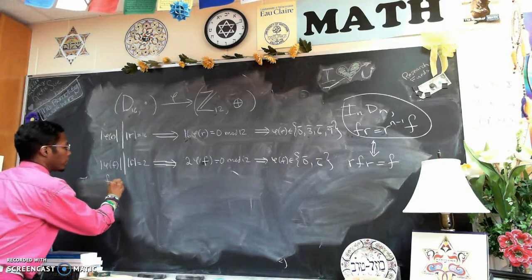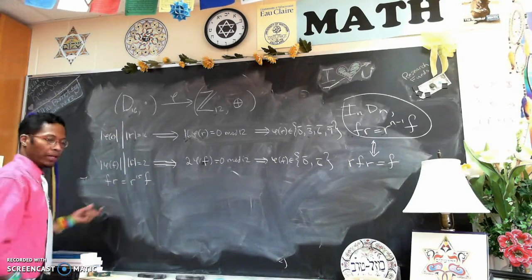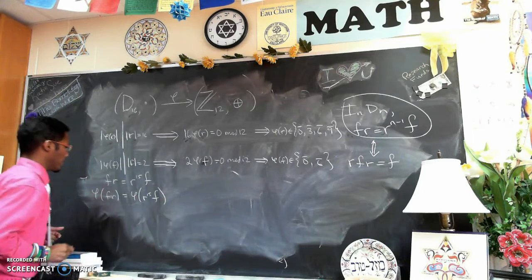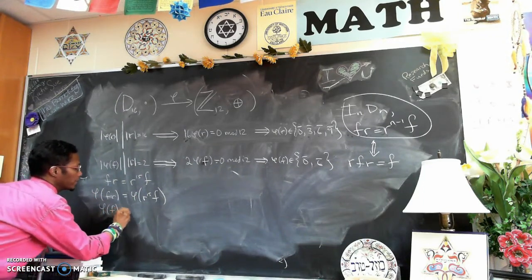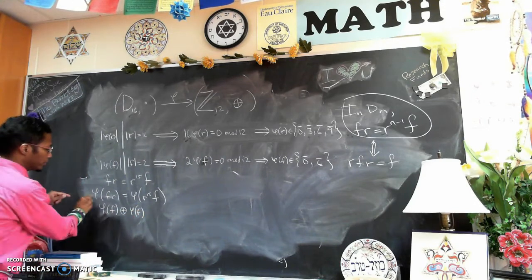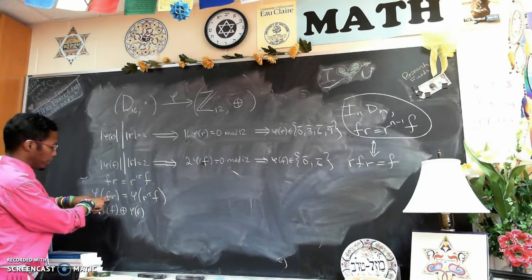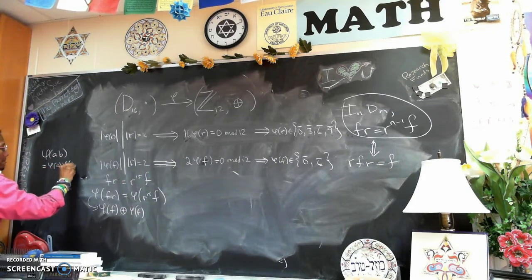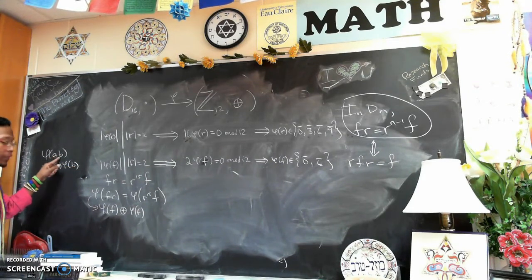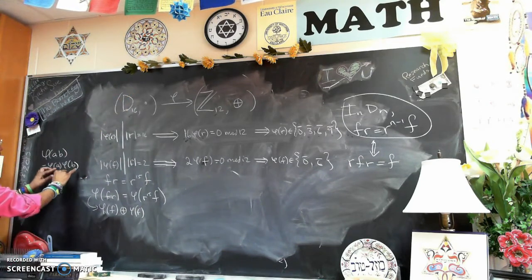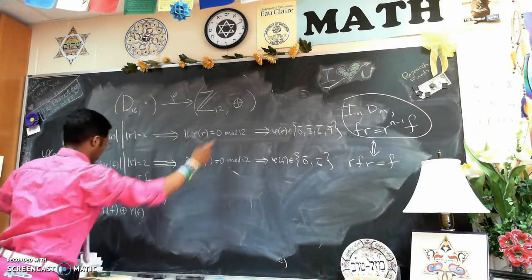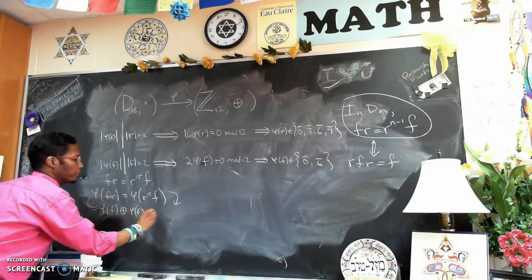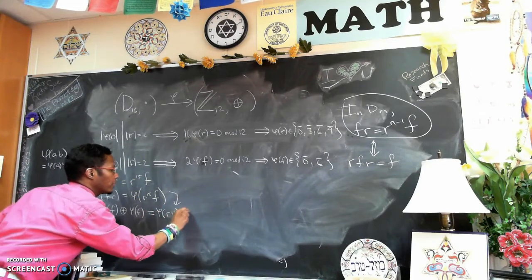So since F times R equals R to the 15th times F, then applying φ to both sides, we have φ(F times R) equals φ(R to the 15th times F). So that means φ(F) plus φ(R) by the property of homomorphisms. Recall, φ(AB) equals φ(A) φ(B). But the operation between A and B here is just in the group, and then the operation between φ(A) and φ(B) is addition. On the right side here, φ(R to the 15th) plus φ(F).